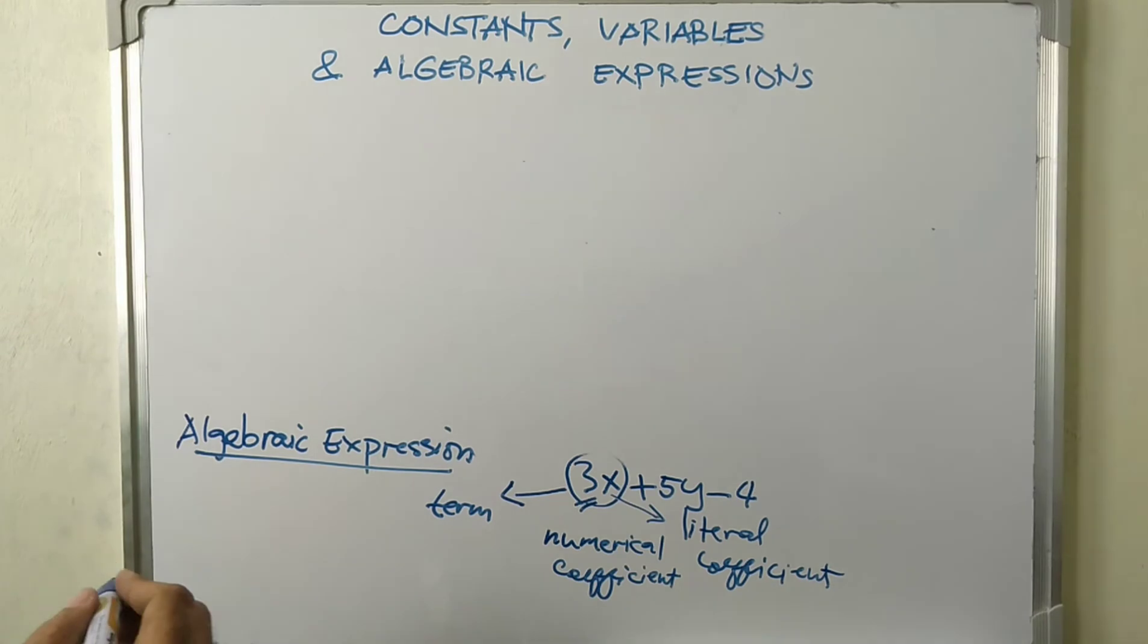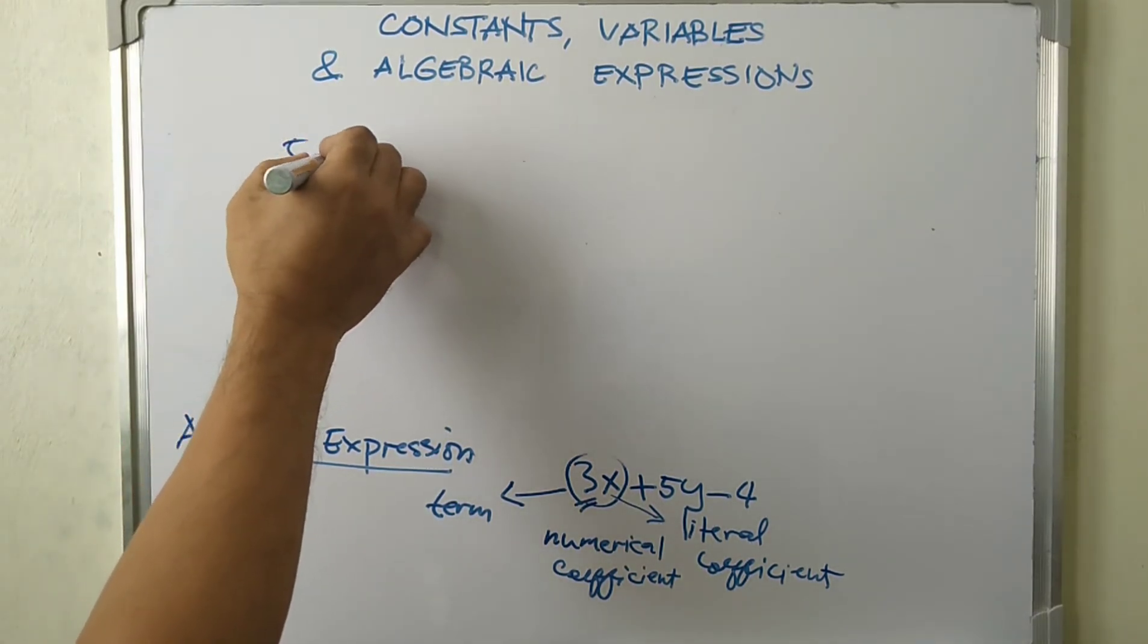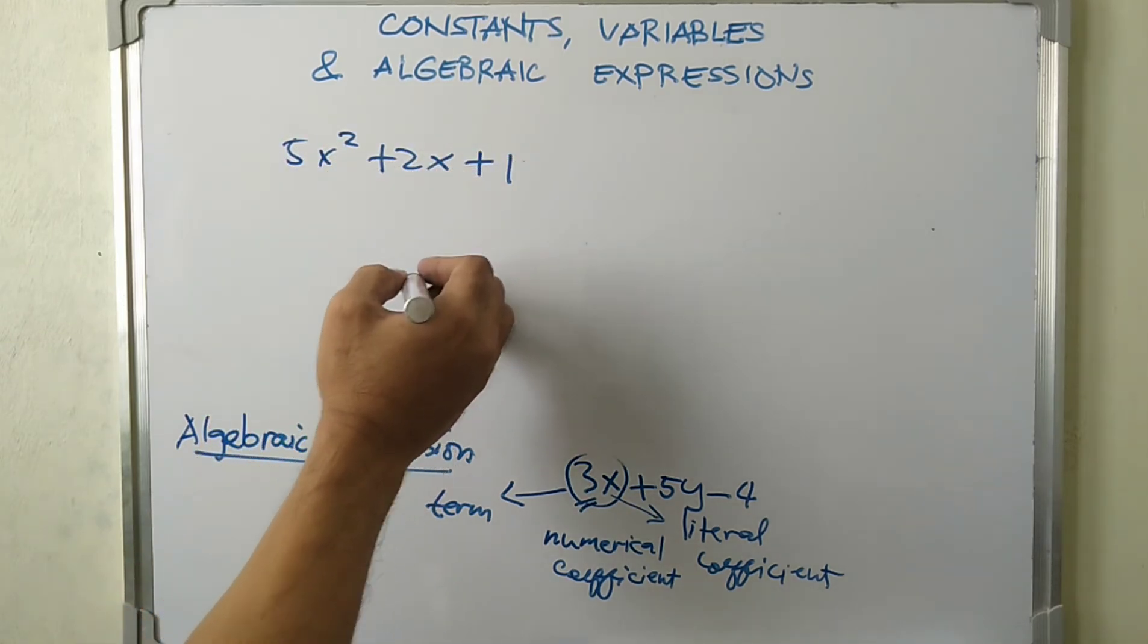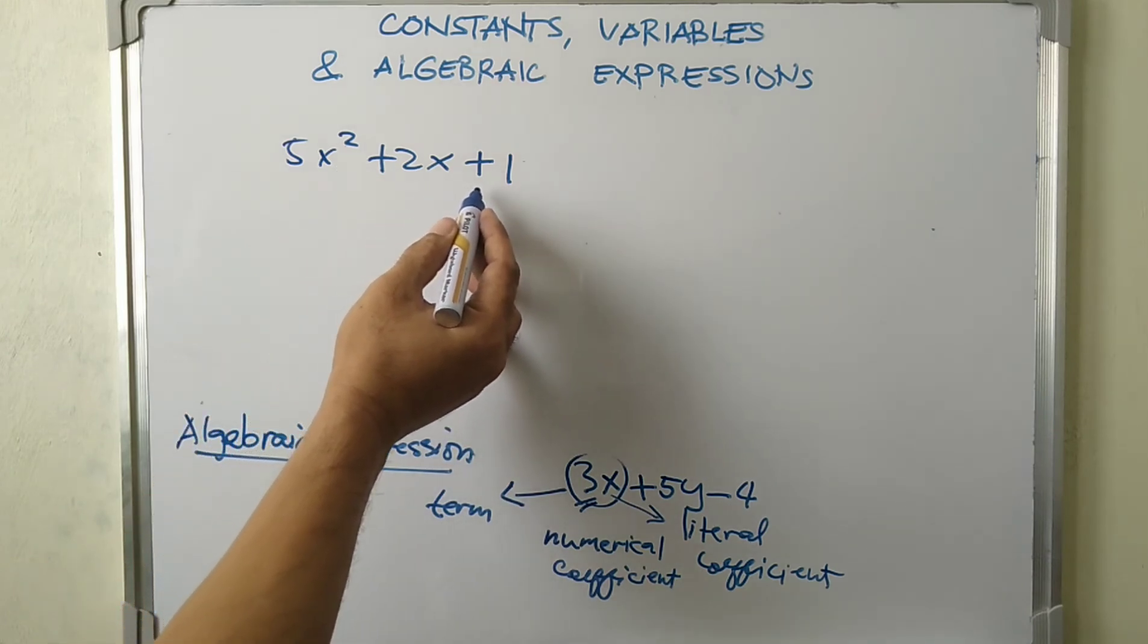Other examples of algebraic expressions are written this way. We have 5x squared plus 2x plus 1.